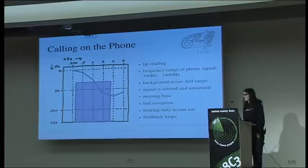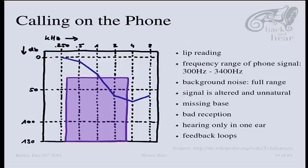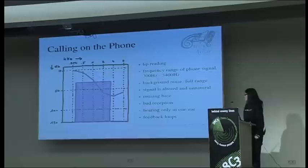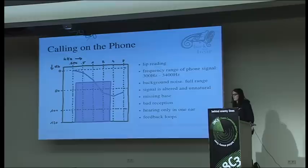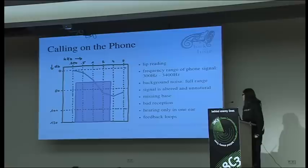A really common problem for hearing impaired people is calling on the phone. First, most people do lip reading — they don't rely only on audio input but use visuals as well, which you don't have on a regular telephone. Also for technical reasons, the frequency range of the phone line is reduced — in Germany it's like 300 hertz to 3.4 kilohertz. The background noise in the room where you're talking on the phone has the full range, so you actually get background noise in better quality than the signal from the person you're talking to. Then the signal is often altered and unnatural, sometimes you have bad reception, and you hear it only in one ear. If you hold the phone to your ear you get a feedback loop.